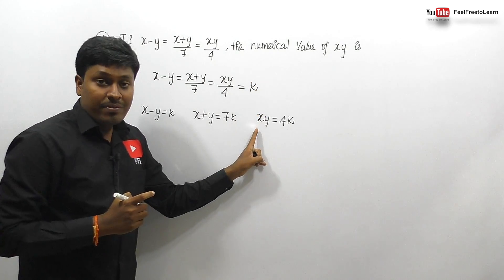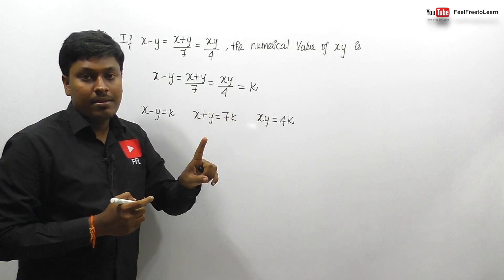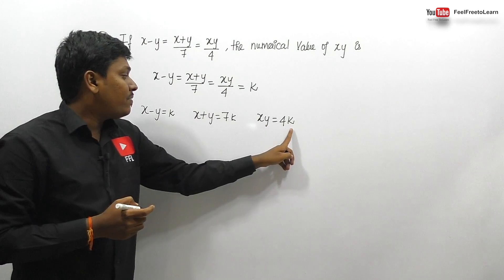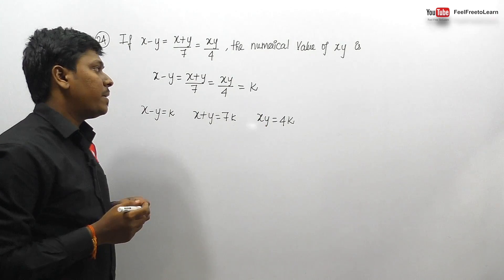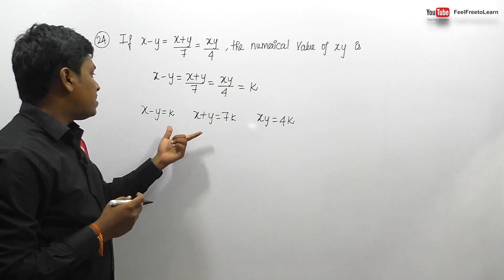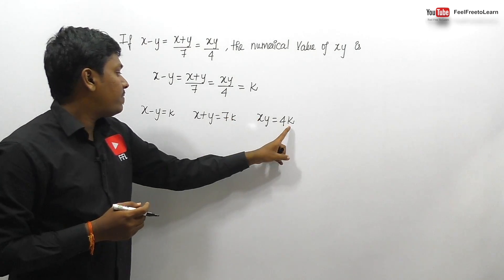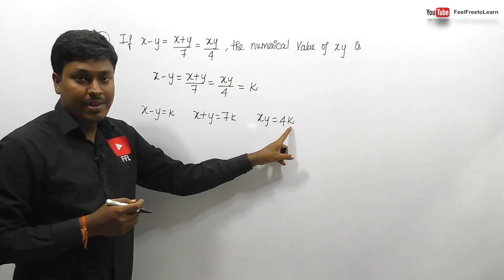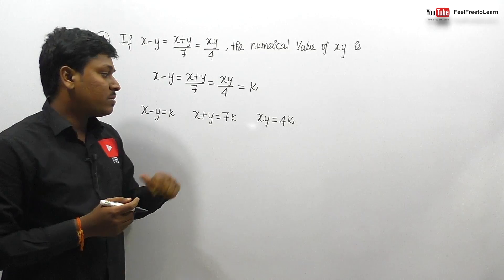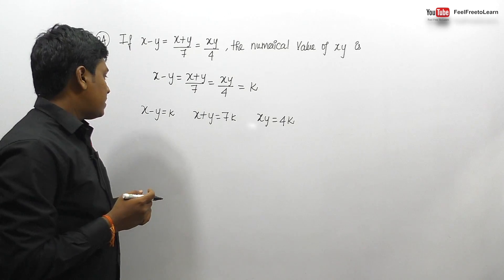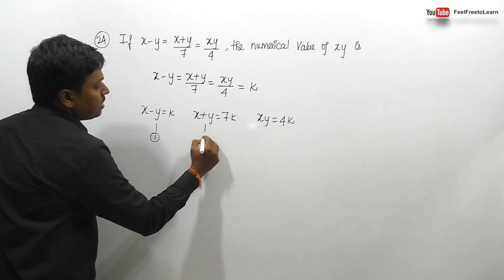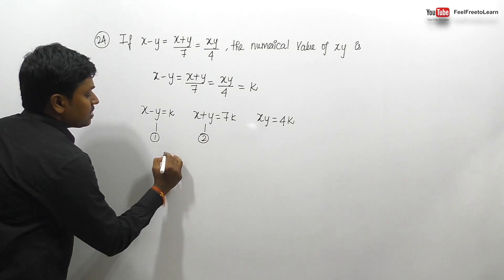Our target is to find the numerical value of xy — not an expression, but an actual number. If we can find the value of k using equations 1 and 2, we can substitute to find xy. Let equation 1 be (x - y) = k and equation 2 be (x + y) = 7k.